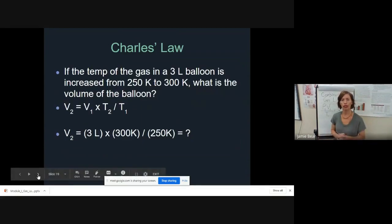Mathematically, we're looking at V1 over T1 equals V2 over T2. We're usually solving for V2 in this scenario. So we say if the temperature of a gas in a three liter balloon is increased from 250 Kelvin to 300 Kelvin, what is the volume of the balloon? If we can remember what Kelvin is, Kelvin equals temperature in centigrade plus 273.